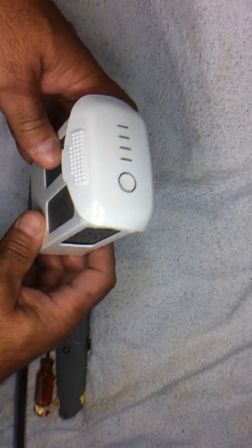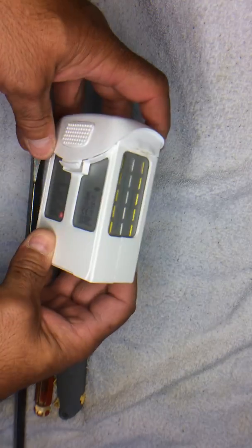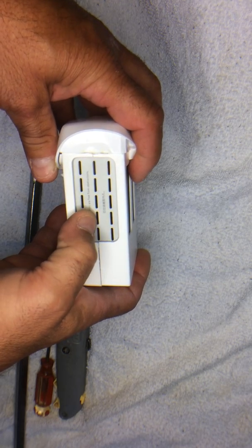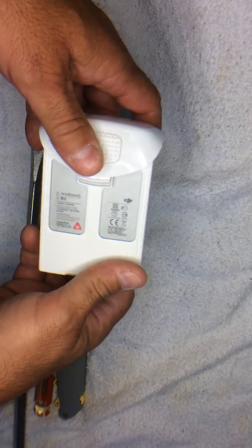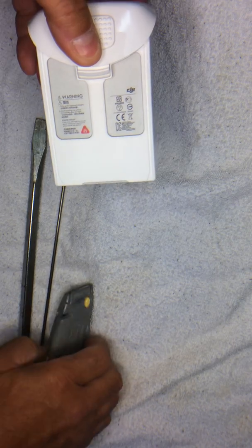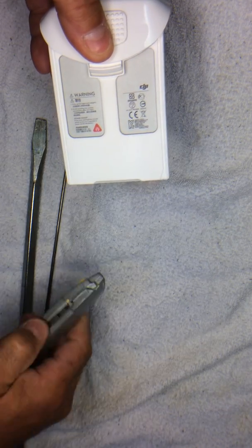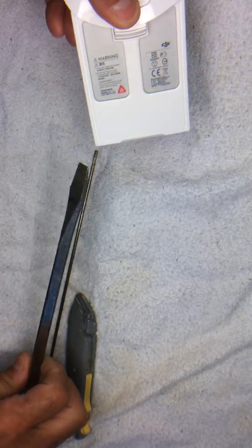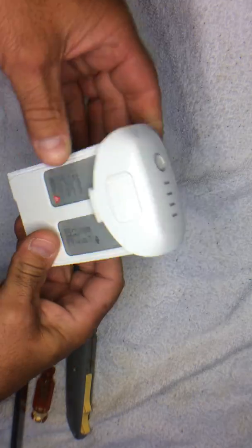And I just want to say another thing while taking these apart, be very careful. There are spaces between these intelligent flight batteries because you have to use a few tools, a sharp razor knife, a small screwdriver for poking, and a large screwdriver for prying this thing apart.